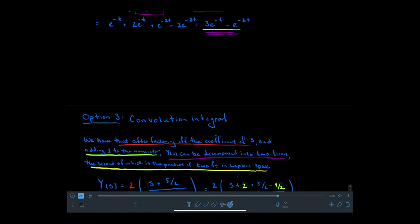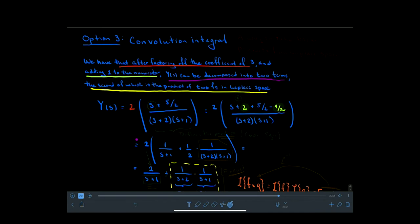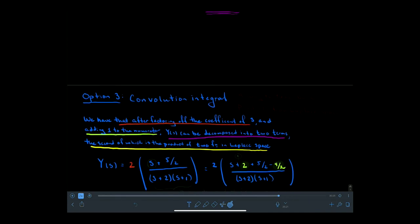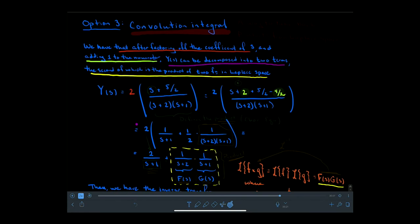Now we explore the third option for solving this initial value problem with Laplace transforms — the convolution integral. A convolution integral is a way to bring back products from Laplace space. In option one, partial fractions break the exponential terms apart so they can be added. In option two, hyperbolic trigonometric functions separate the two solutions through addition, but the cost was completing the square. So you might ask: how can I just transform products back from Laplace space directly?